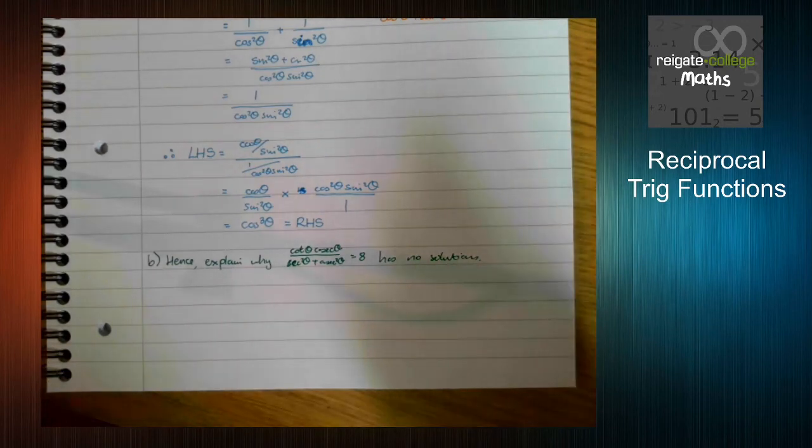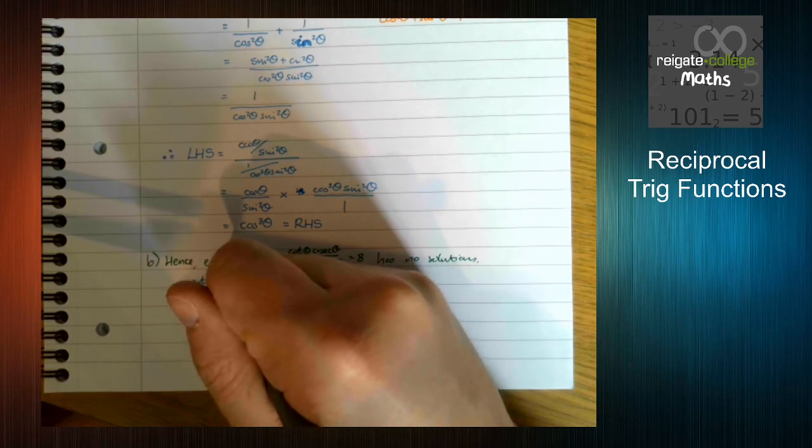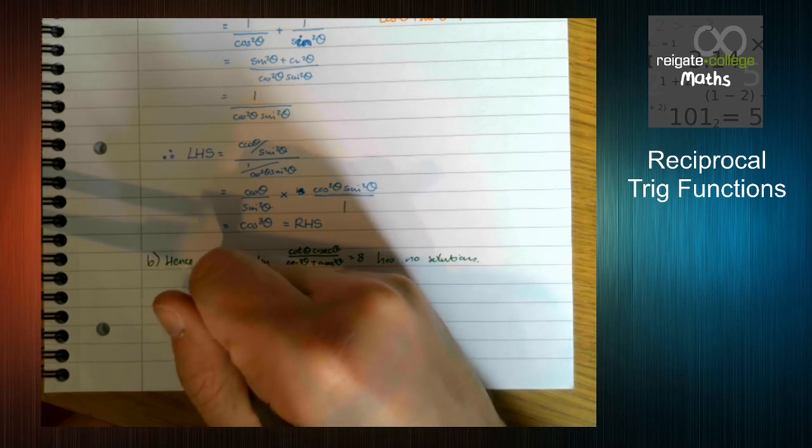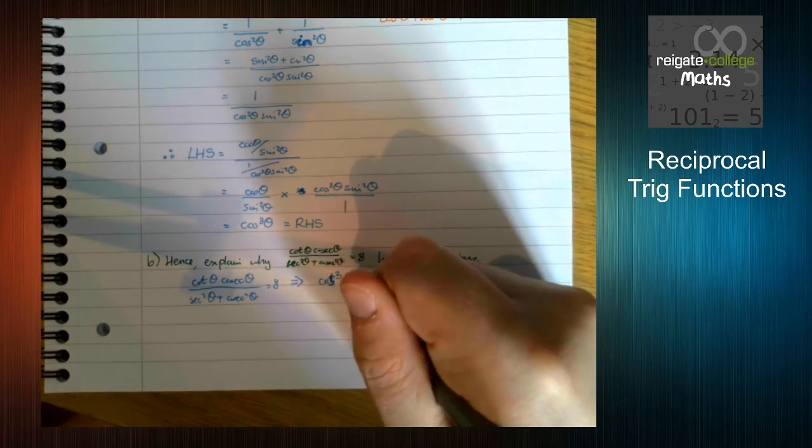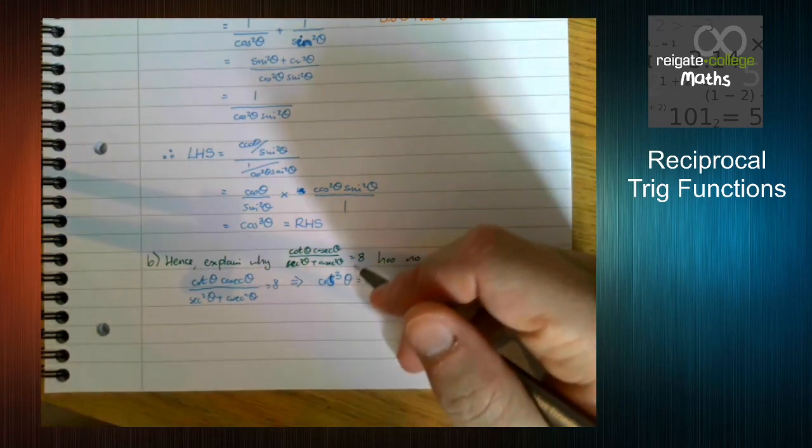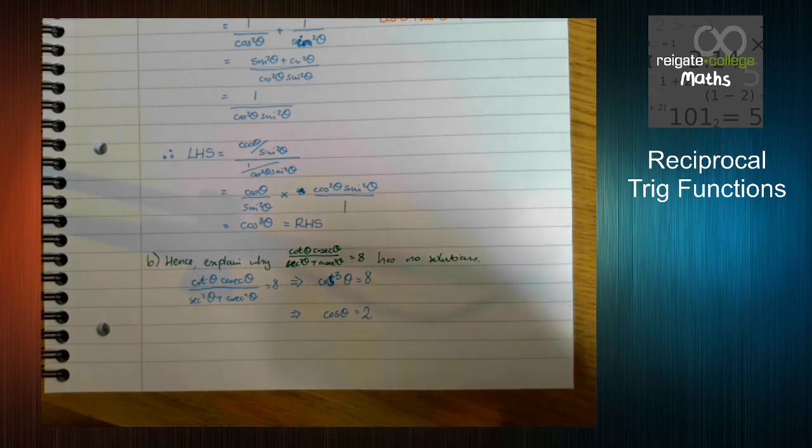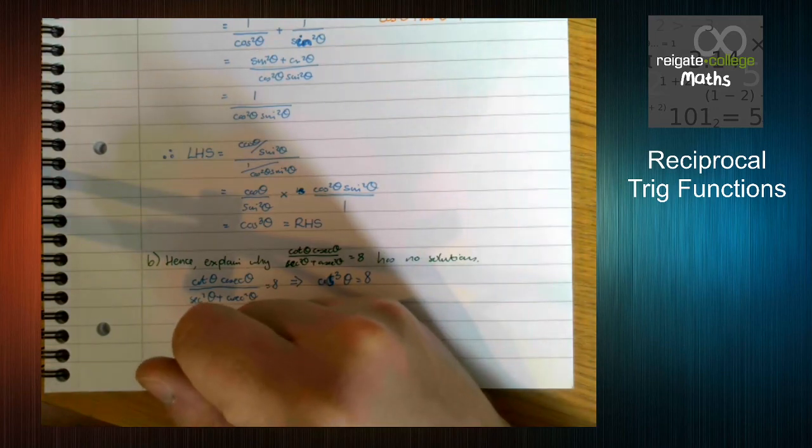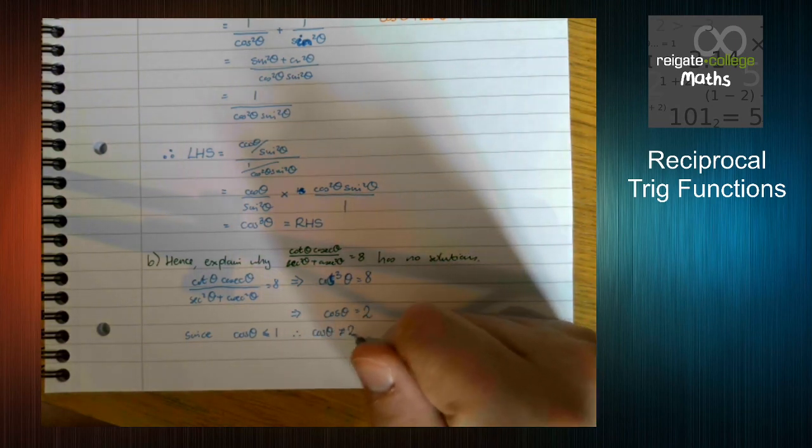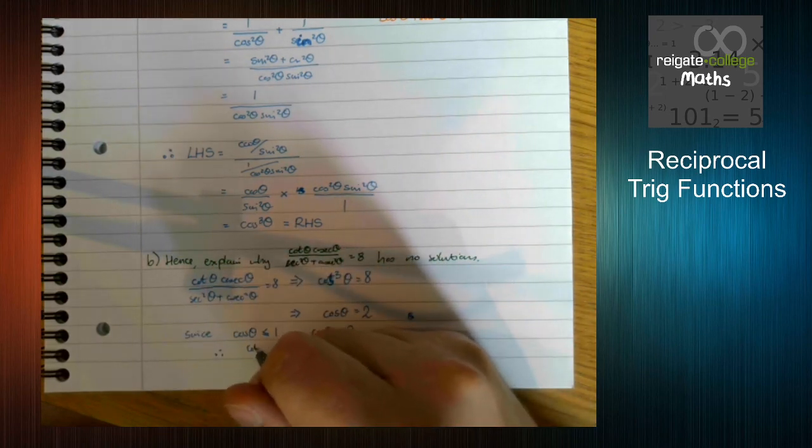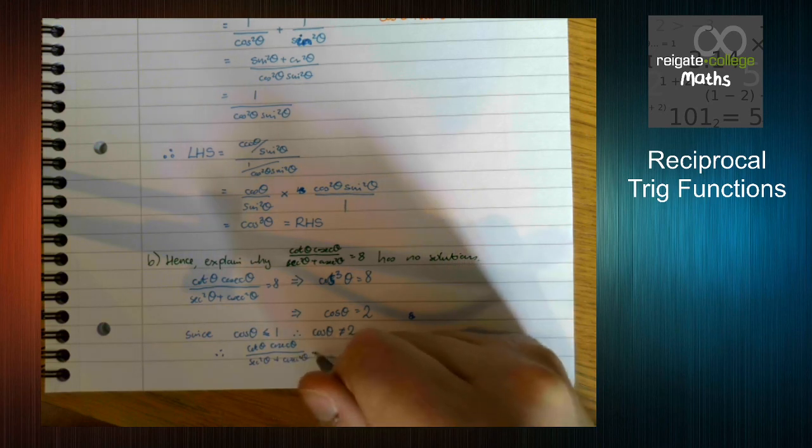So it says hence, so we've got to clearly evidence what we've done in part A. We can see that cot θ cosec θ over sec squared plus cosec squared equals 8 tells us that cos cubed θ equals 8. cos cubed θ equals 2, and that should really explain it to you, because cos θ must be less than or equal to 1. So it can't equal 2. So therefore, this equation here cannot equal 8.